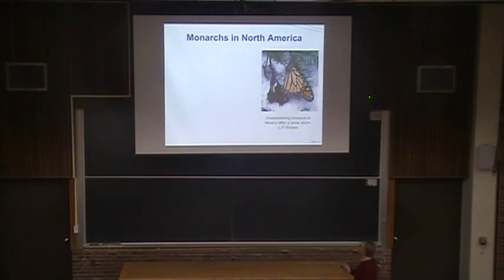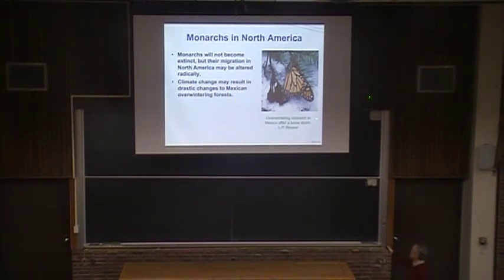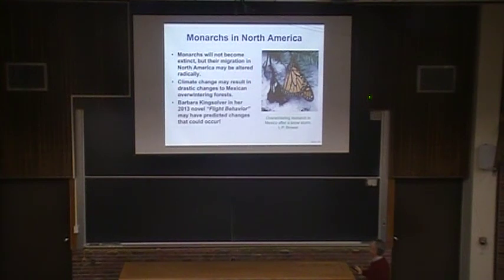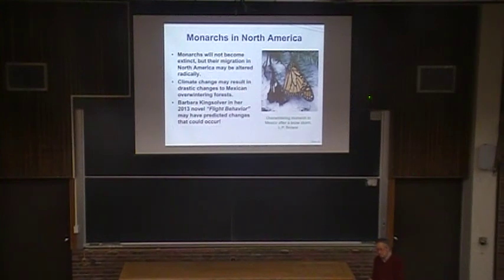The bottom line is monarchs won't become extinct, but the migration may be altered gradually. Climate change can result in drastic changes to the overwintering forests — snowstorms in Mexico are becoming less and less common. Barbara Kingsolver's novel 'Flight Behaviour' suggested that monarchs could start overwintering in the Appalachian mountains, in the Smokies or somewhere like that — and this is a real possibility that might happen.